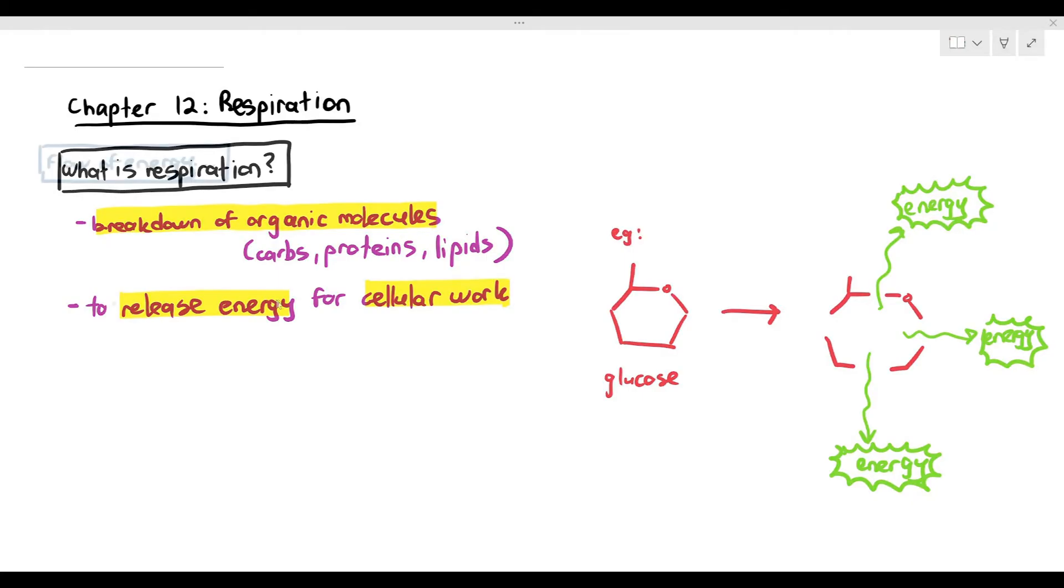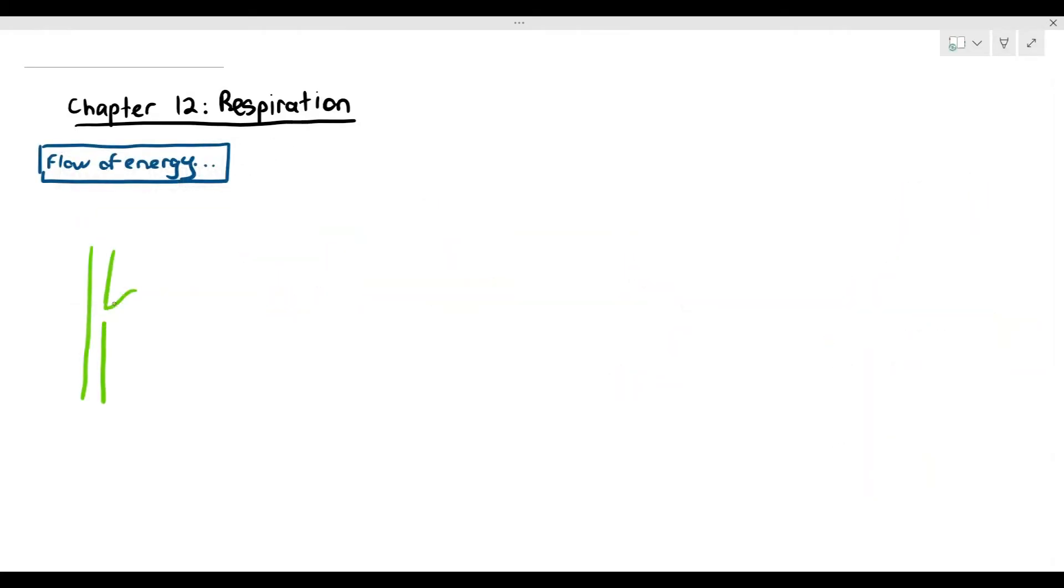So it's also good to understand the flow of energy in nature because this helps us understand where energy comes from. Because one of the important tenets in the law of thermodynamics states that energy cannot be created nor can it be destroyed. So where does the energy come from in the glucose molecule? So we start off with photosynthesis where light energy is captured by the chlorophyll and it's converted. And through a series of reactions, which we will see in chapter 13, glucose molecule is made.